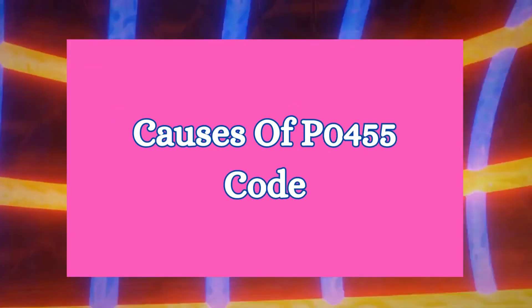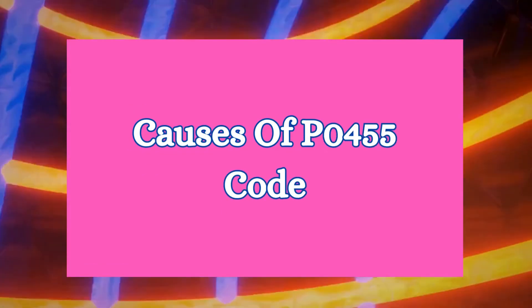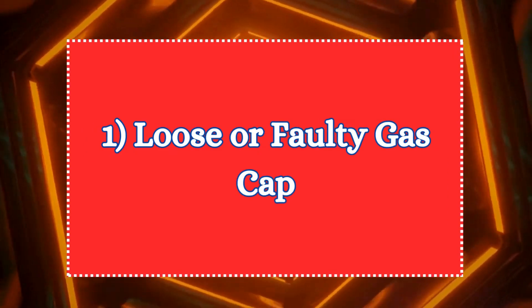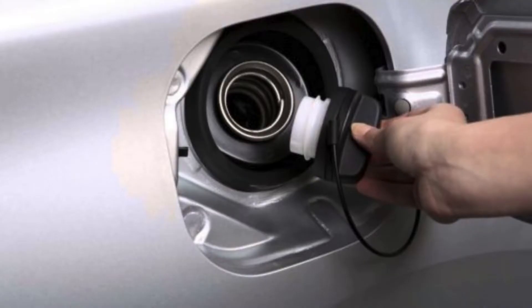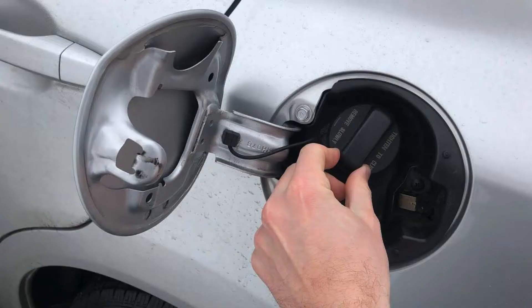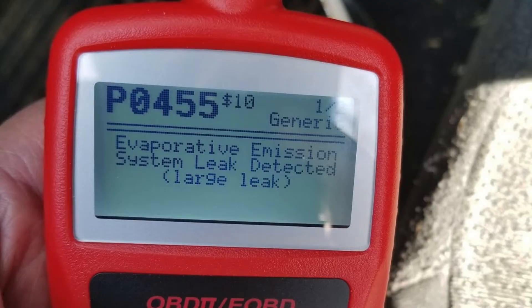Let's discuss the common causes of the P0455 code. 1. Loose or faulty gas cap. The gas cap seals the fuel system to prevent fuel vapors from escaping. A loose or damaged gas cap allows vapors to leak out, disrupting the pressure balance in the EVAP system and triggering the P0455 code.